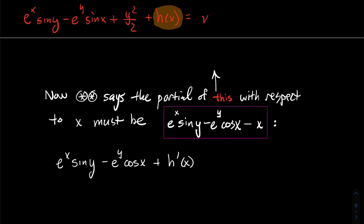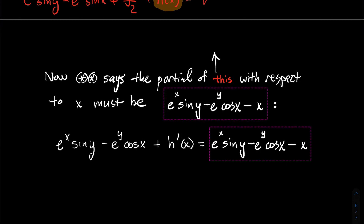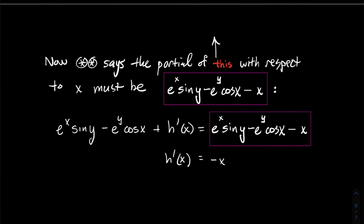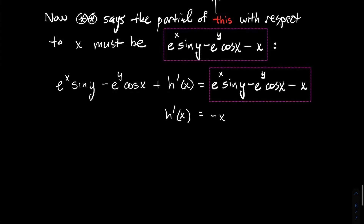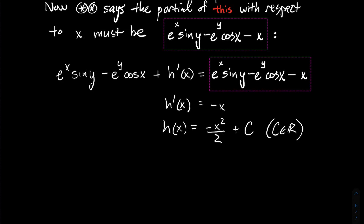Taking the partial derivative with respect to x of our expression for V — here's what you get. Notice that when you take the partial derivative of h, that's just the derivative of h since h only depends on x. And we know that should equal what was boxed in pink. If you notice what happens, a lot of things cancel: the e^x sin(y) terms cancel, the minus e^y cos(x) terms cancel. You should just get that h'(x) equals negative x. Integrating both sides, h equals minus x²/2 plus some constant.